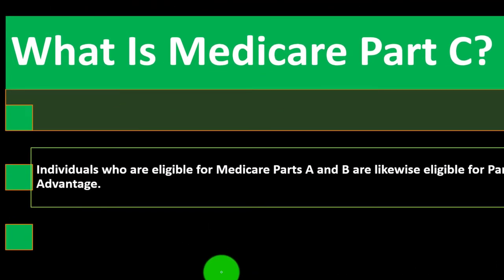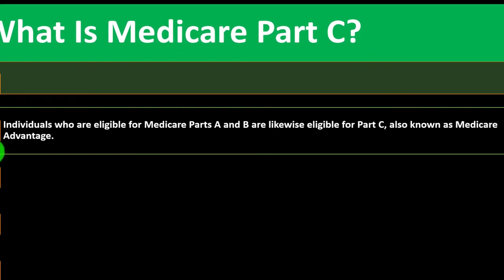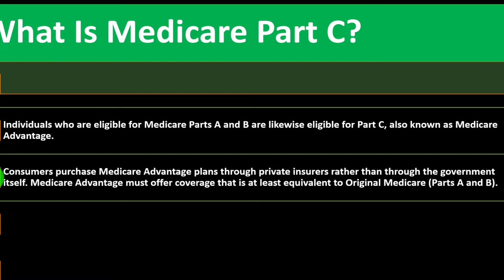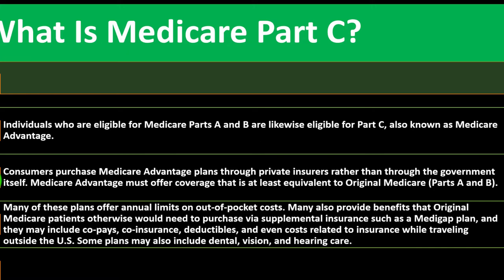What is Medicare Part C? Individuals eligible for Medicare Parts A and B are likewise eligible for Part C, also known as Medicare Advantage. Consumers purchase Medicare Advantage plans through private insurers rather than through the government. Medicare Advantage must offer coverage at least equivalent to original Medicare Parts A and B. Many of these plans offer annual limits on out-of-pocket costs, which allows you to self-insure up to that maximum. Some plans may also include co-pays, co-insurance, deductibles, and even coverage for care while traveling outside the U.S.